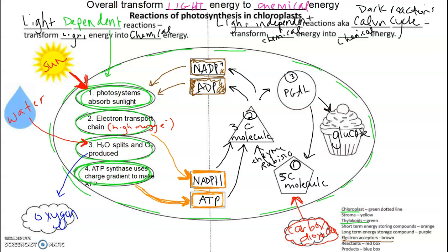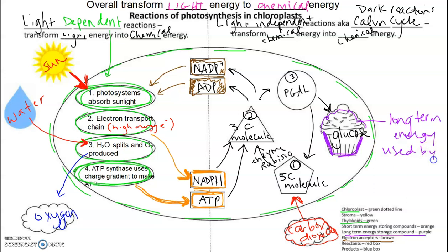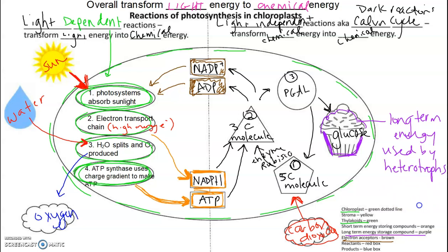With glucose, I'm going to grab purple and call this a long-term energy storing compound. Glucose is long-term chemical energy, and it's going to be used by heterotrophs. Heterotrophs will break it down in cellular respiration and ultimately use it for processes like active transport — but we'll talk about that later when we look at cellular respiration.